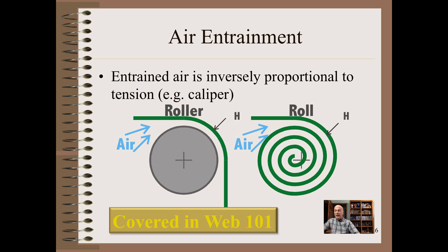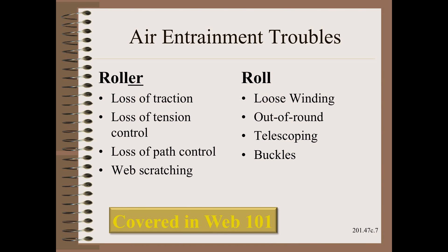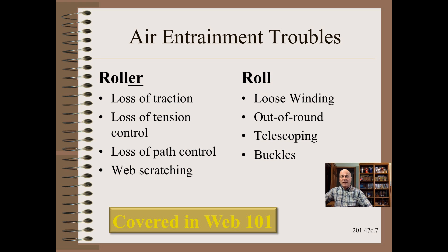The amount of air entrained between a web and a roller, or web and wound roll, increases when web thickness and tension are reduced. In summary, we know how much air is getting in and how to treat it — such as grooving of rollers or nips on winding rolls — and even, quantitatively, how much the treatment is worth in some cases, as detailed in my roller book and made easy on an Abbott app. Increasing air entrainment on lighter webs can exacerbate a number of problems on rollers and on the wound roll, covered in detail in our Web 101 class.